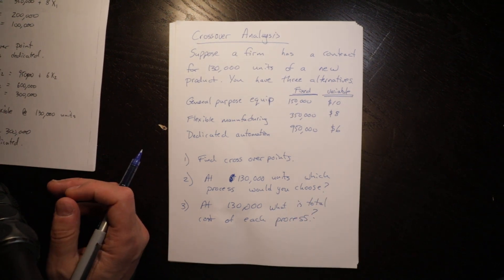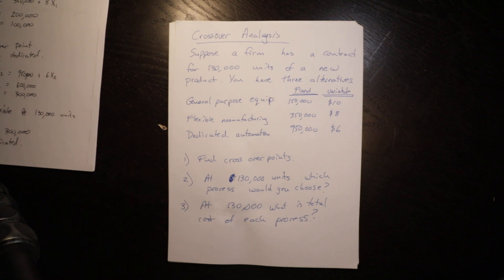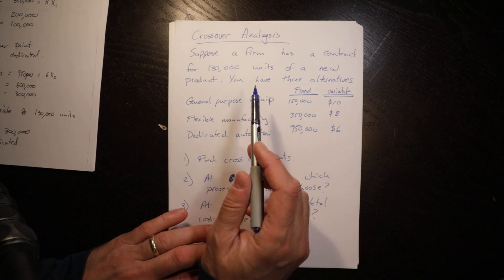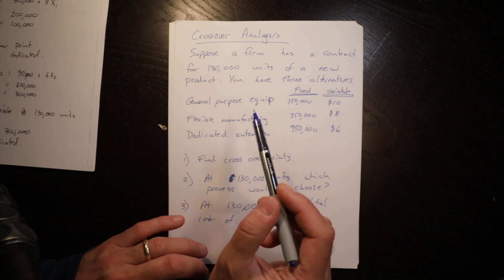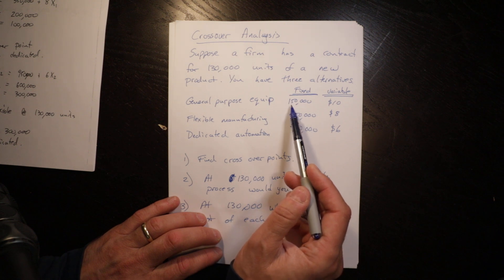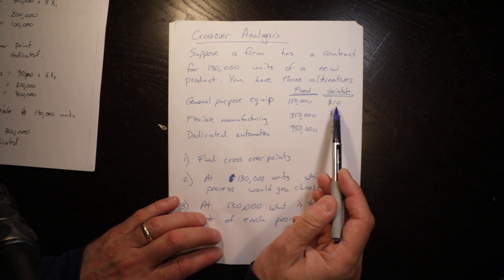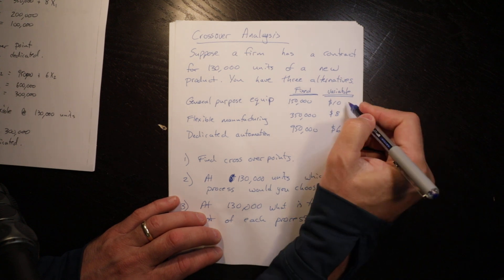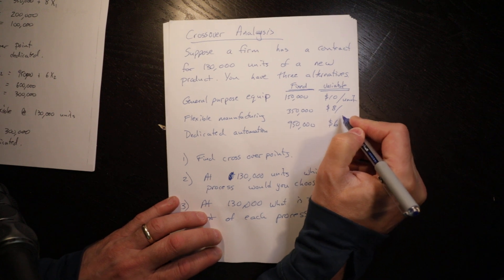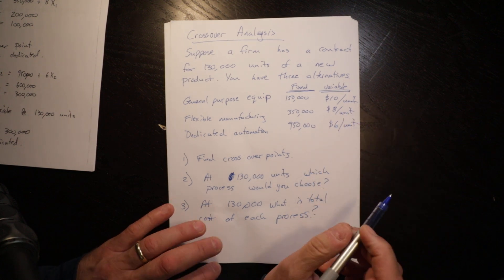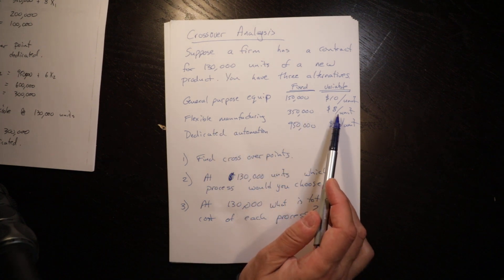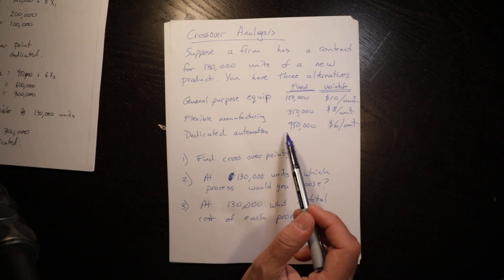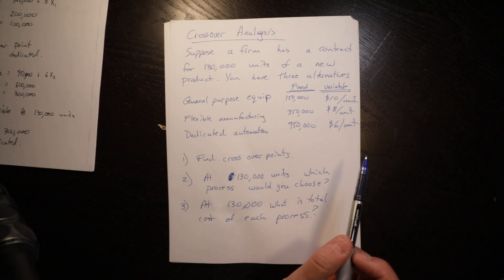The higher fixed costs you have, the lower variable costs you should have, otherwise the option becomes very easy. In this circumstance we have a firm that has a contract for 130,000 units of a new product and they have three alternatives for equipment. General purpose equipment has a fixed cost of $150,000 and a variable cost of $10 per unit. Flexible manufacturing is $350,000 fixed with a variable cost of $8. Dedicated automation is $950,000 fixed with a variable cost of $6.